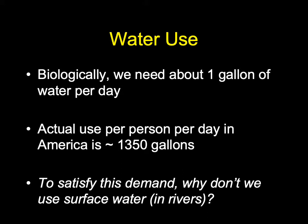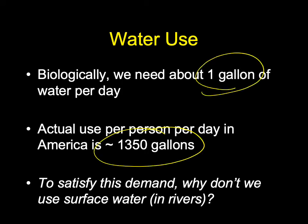Biologically, humans need about one gallon of water per day to maintain biological life. The actual use of water per American per day is about 1,350 gallons — accounting for showers, flushing toilets, washing clothes, watering lawns, washing cars, and the water used in making items or food we use in everyday life. So what we actually need versus what we actually use is very, very different, and there's a huge demand in many countries for a lot of water per individual.